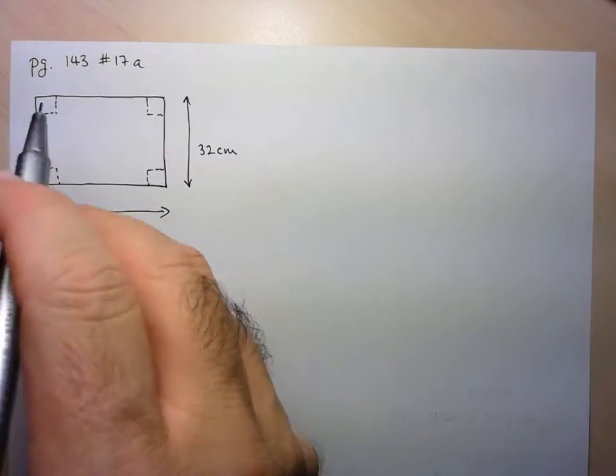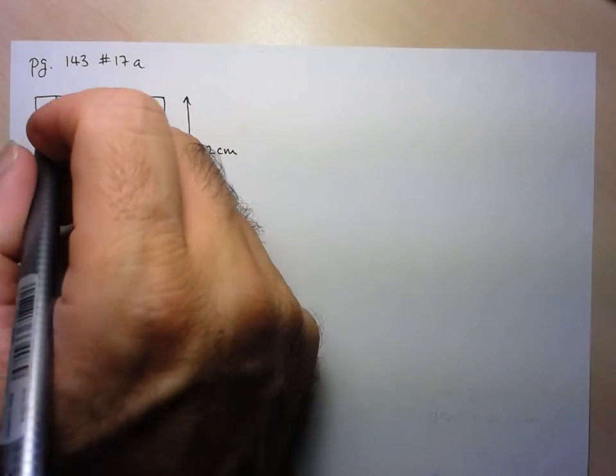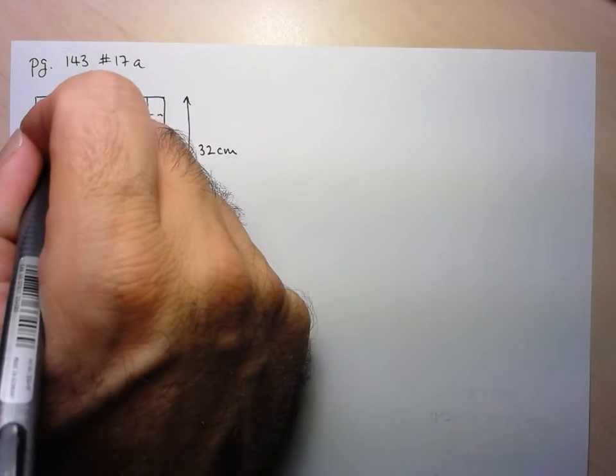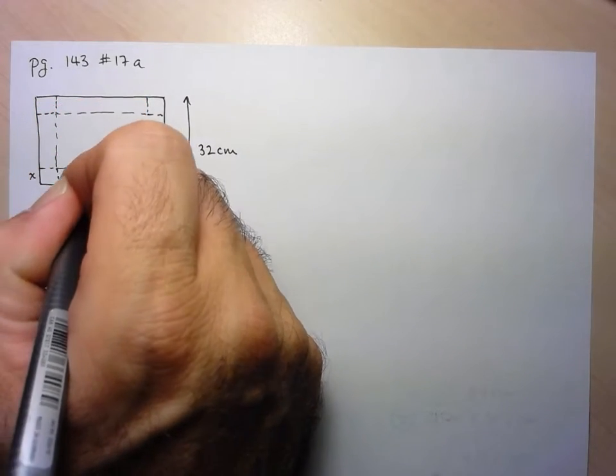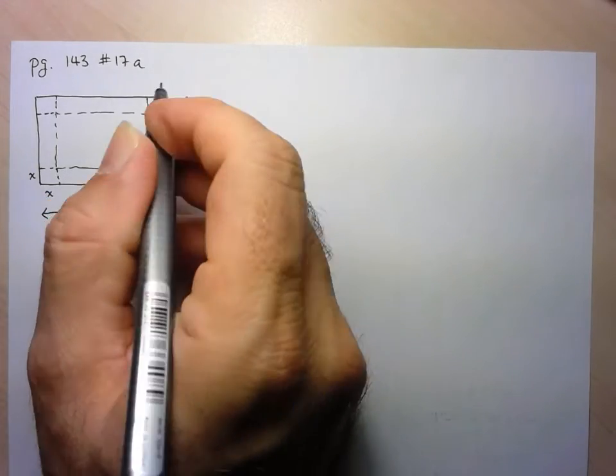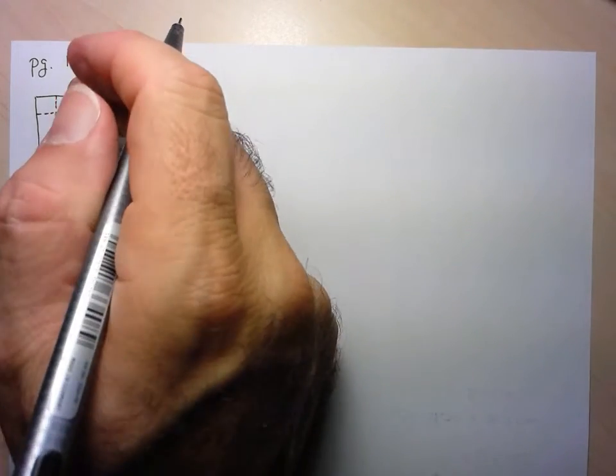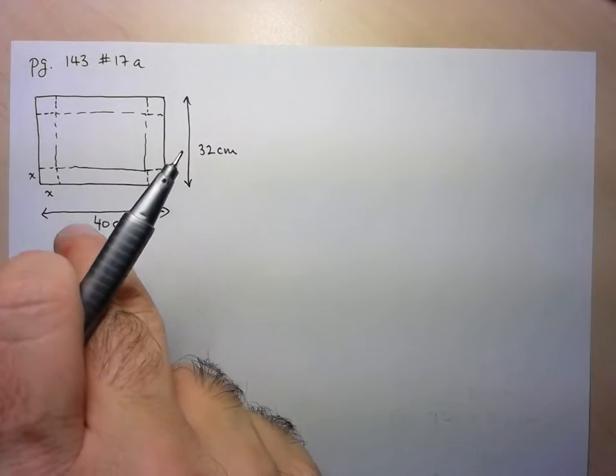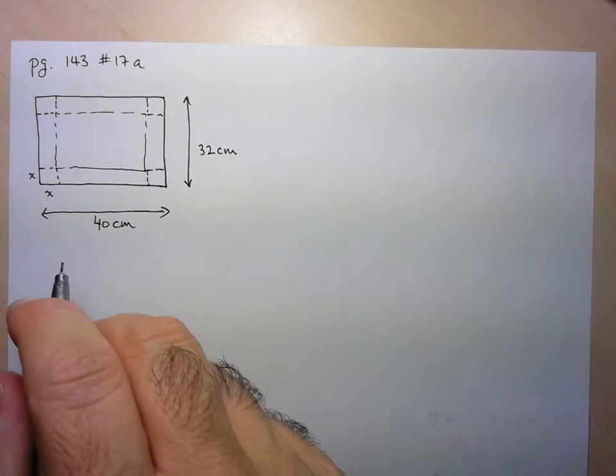Okay, the reason why this gives us an open top box is if I cut these off, this here becomes the base of the box, and I'm folding over these flaps. These four flaps get folded over, and I end up with an open top box.